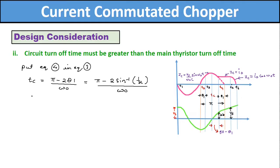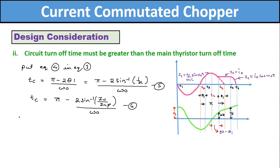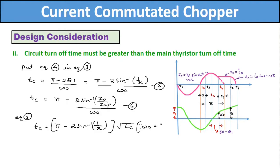We can also write Tc = [π - 2 sin⁻¹(I0 / ICP)] / ω₀. Since ω₀ = 1/√(LC), substituting gives Tc = [π - 2 sin⁻¹(1/X)] × √(LC). Let this be equation number 7.